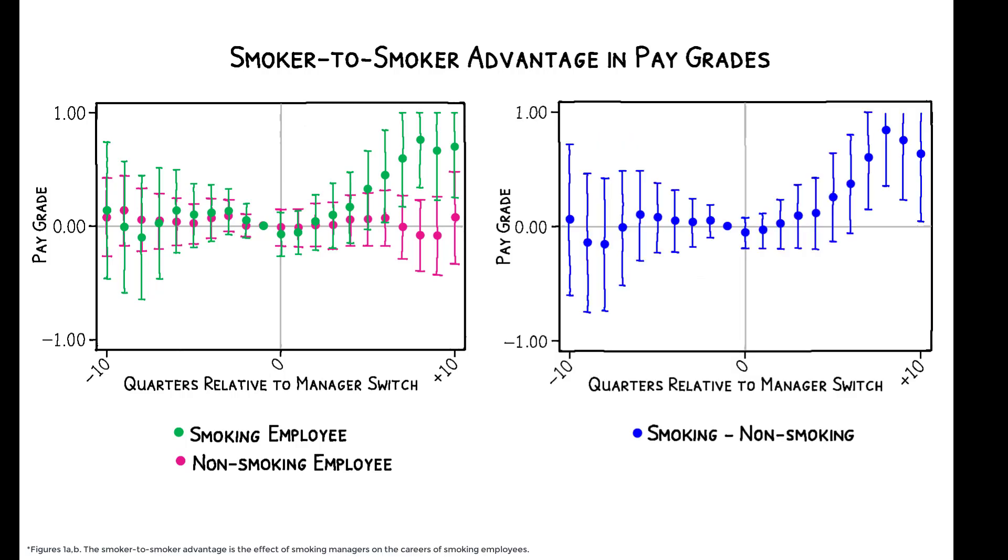This figure directly measures the smoker-to-smoker advantage by subtracting these coefficients from these coefficients. At ten quarters after the transition, the smoker-to-smoker advantage amounts to a 15% effect on base salary.